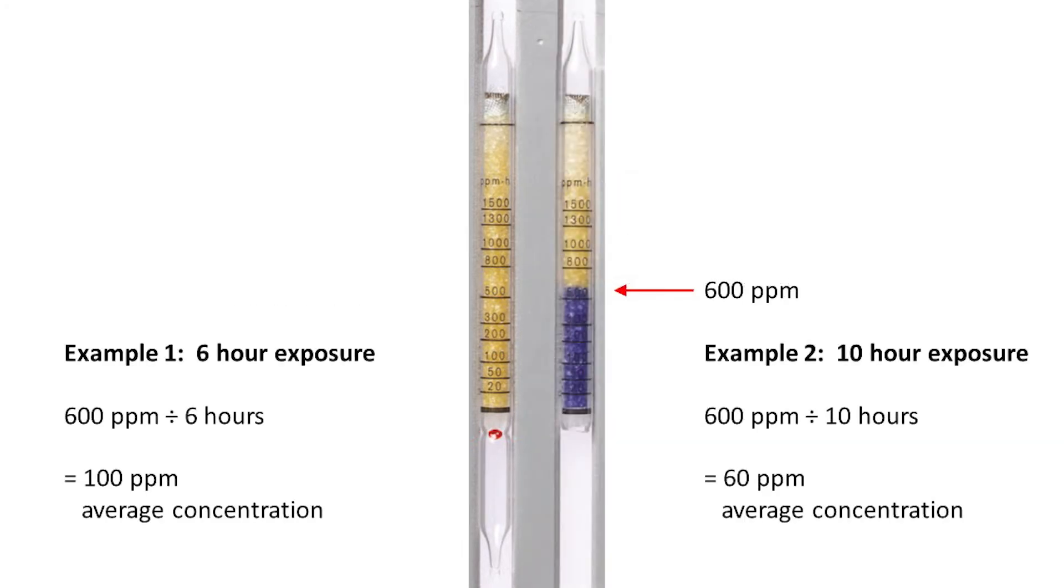This concentration time reading is divided by the number of hours of exposure to the barn air to get the average concentration in parts per million over that monitoring period.